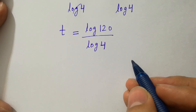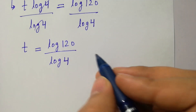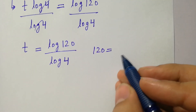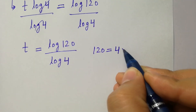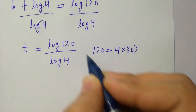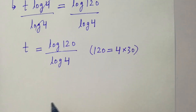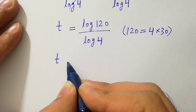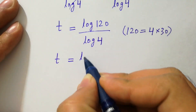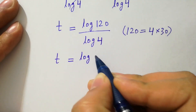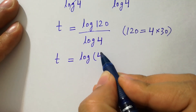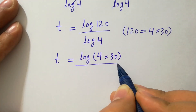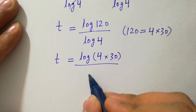Since 120 is equal to 4 times 30, we have t equal to log of 4 times 30, over log 4.